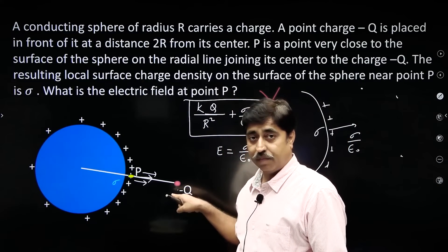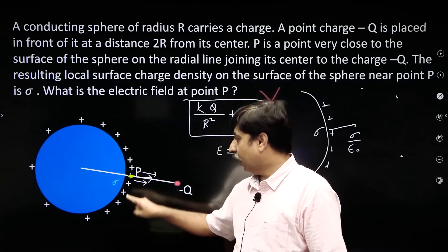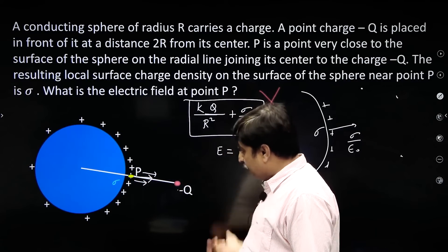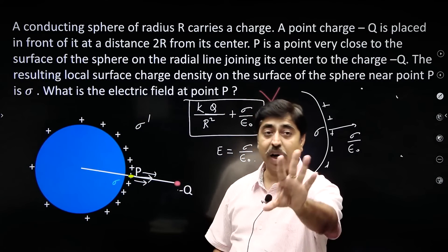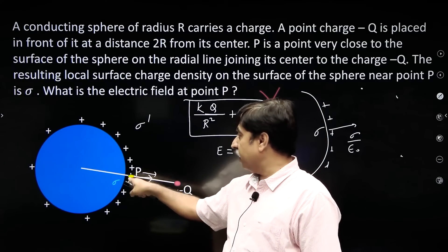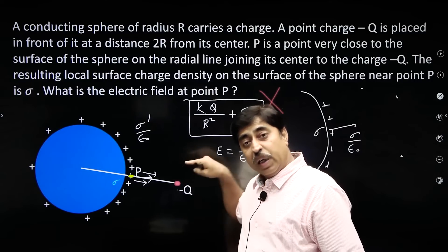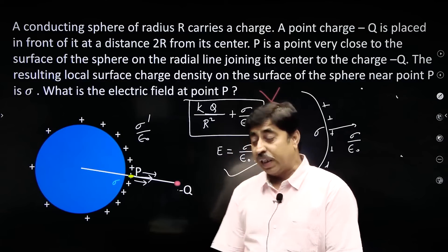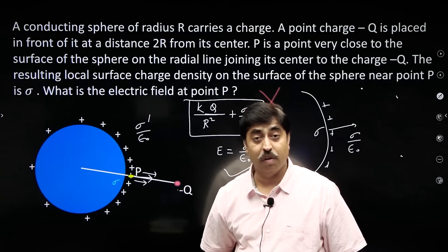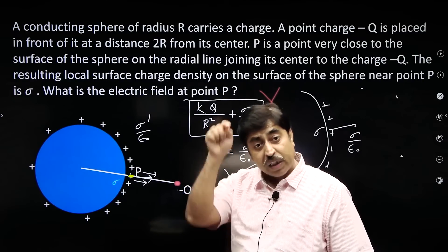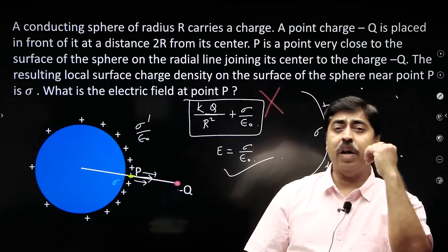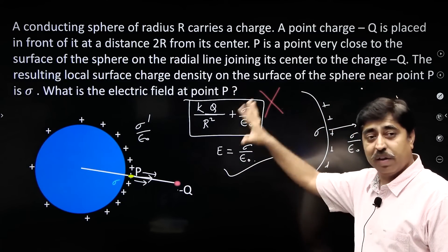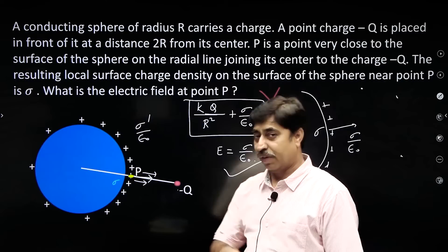When you keep the charge here, it attracts some positive charges and the value of sigma becomes higher. In presence of this charge, density is sigma; in absence of this charge, density is sigma dash and field is sigma dash by epsilon naught. So this charge is actually having an effect — keeping it changes the charge density — but the formula for electric field near the surface of a conductor is always sigma by epsilon naught, whatever the surrounding charges. The resultant field is given by sigma by epsilon naught.